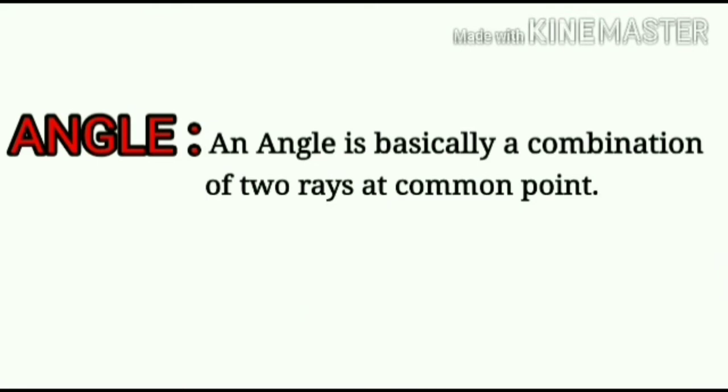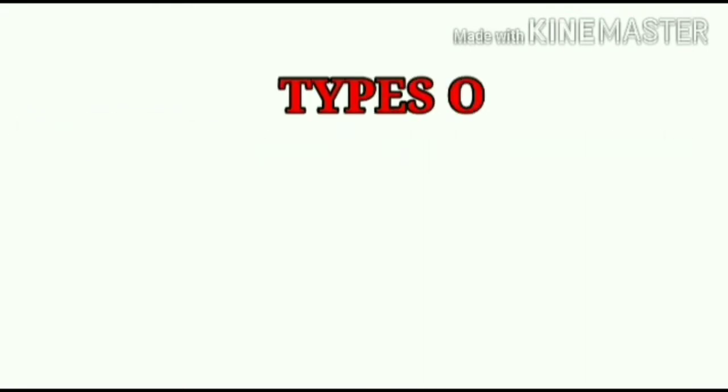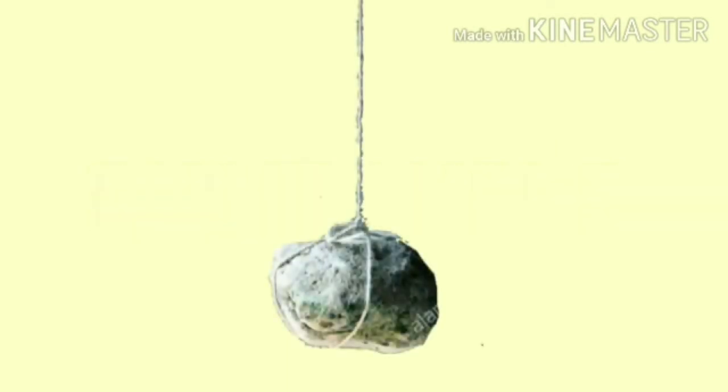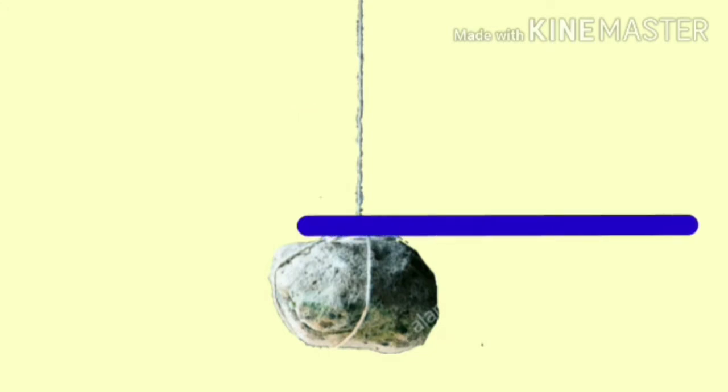Now let's have a look at different types of angles. The first type is right angle. Dear children, if you tie a stone at the end of a thread and if you will hang it like this, the stone will go towards the ground and the thread will be straight and it is not slanting in any manner. And if we draw a line parallel to the ground, these two rays will make a right angle.